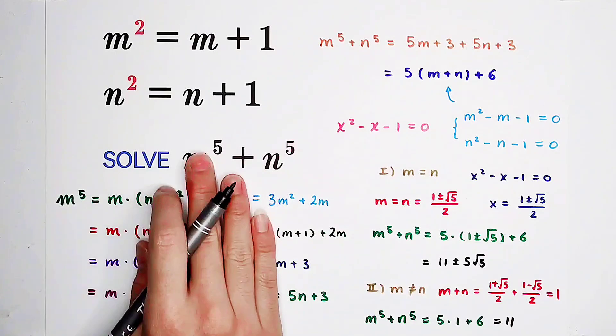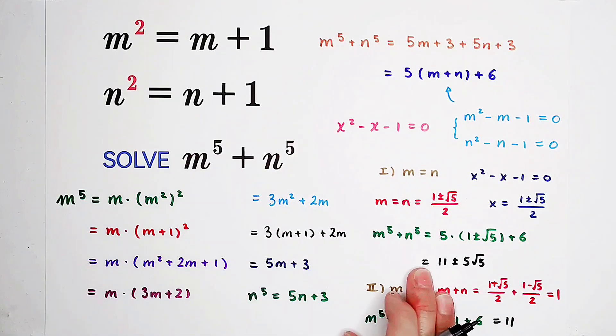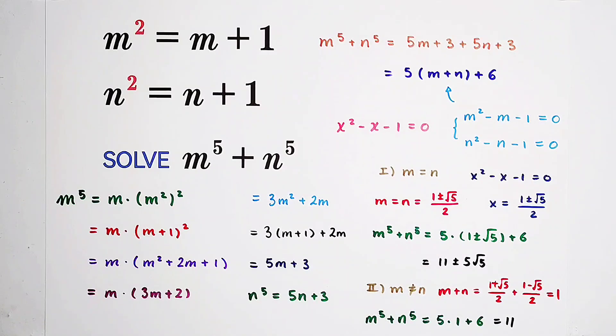Three answers to the question: 11, 11 plus 5 root of 5, 11 minus 5 root of 5. Did you get them? Give me a thumbs up. Subscribe to me for more wonderful questions. We'll see you next time. Bye bye.